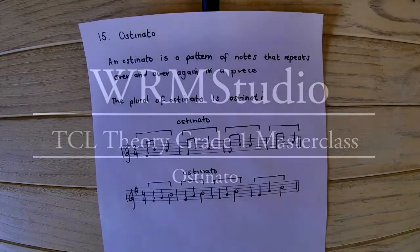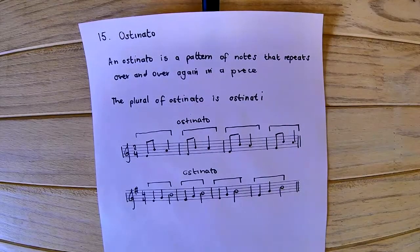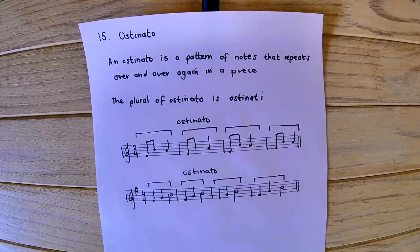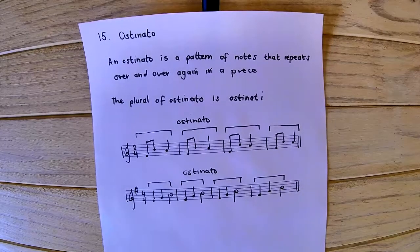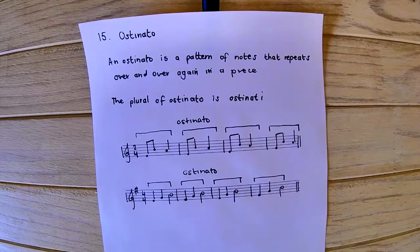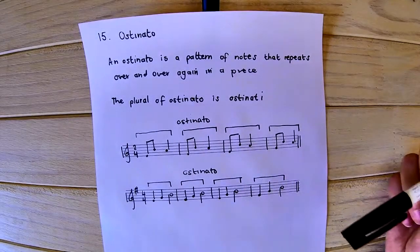In this lesson, we take a look at the ostinato. What does an ostinato mean? An ostinato is a pattern of notes that repeats over and over again in a piece. So it's a pattern of notes, and it's usually the rhythm as well as the pitch that stays the same.